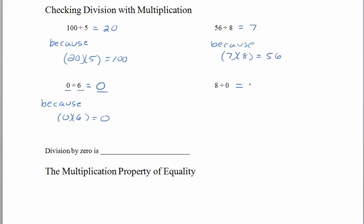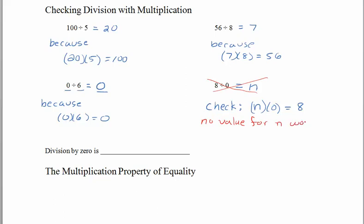Does this even have an answer? Let's suppose it does and call the answer n. When we go to check this, we would say that n times 0 equals 8 — and here's where we see that no value for n works. Because no value for n works, we say that division by 0 is undefined. If you tried 8 divided by 0 on your calculator, it will give you some sort of error message — some say error, some say error divided by 0. Division by 0 is not allowed in mathematics; it just doesn't work.